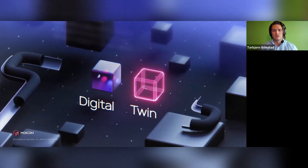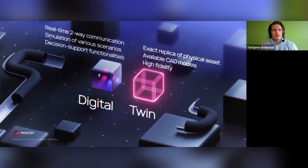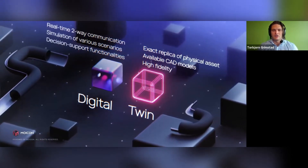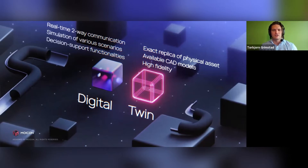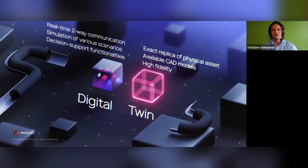This is how Moicon interprets the digital twin — we split it into its two respective words: the digital and the twin. The way we leverage the digital part, the software part, is that we want to achieve a two-way communication between the physical environment and the virtual model. Meaning you can communicate from sensors to the model, and from the model back — also from software to the digital twin and from the digital twin to the software. We have this bi-directional connection.